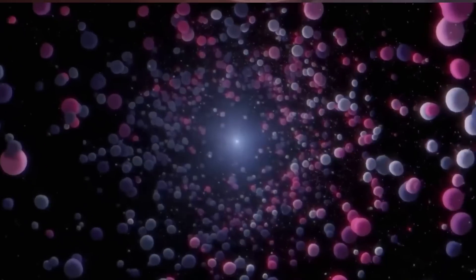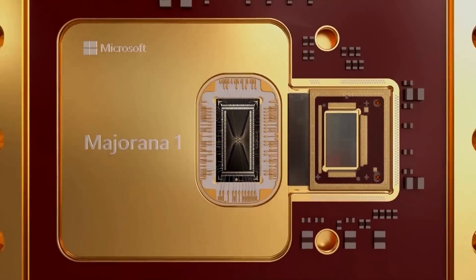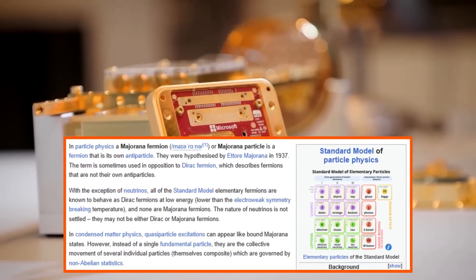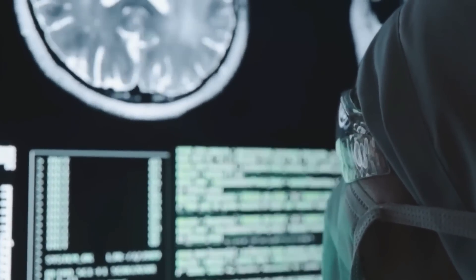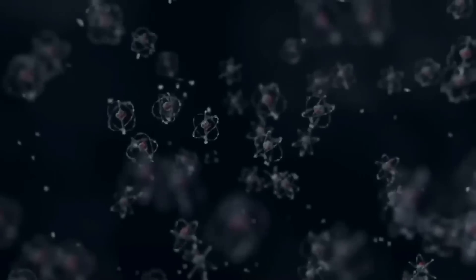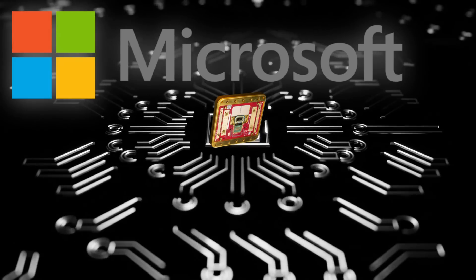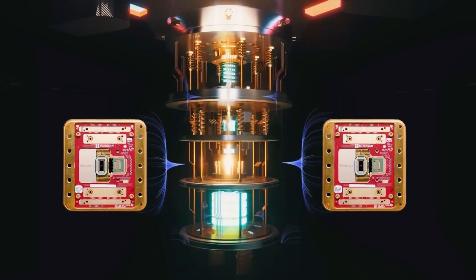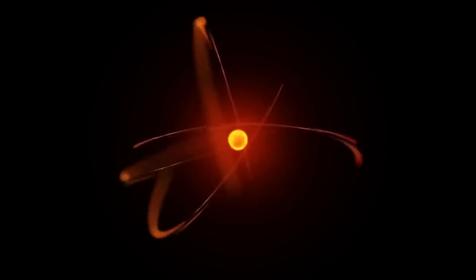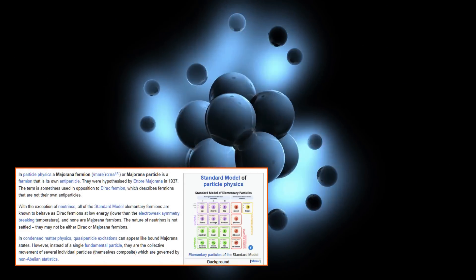Unifying quantum mechanics and gravity. One of the most tantalizing possibilities is that this finding is the first observational evidence linking quantum mechanics and gravity. For decades, physicists have struggled to reconcile these two fundamental theories. Quantum mechanics excels at describing the behavior of particles at the smallest scales, while general relativity provides a robust framework for understanding gravity and the structure of spacetime. However, they have traditionally been seen as incompatible in extreme conditions such as those found in a black hole. This discovery might be the first sign that a unified theory is within reach, one that can describe the universe from the tiniest particles to the largest cosmic structures.